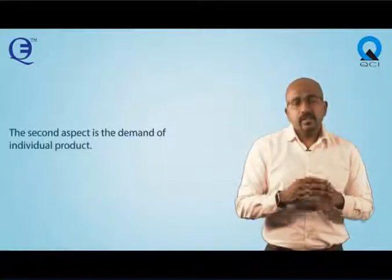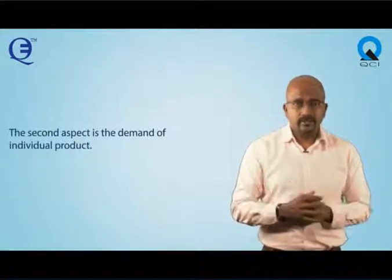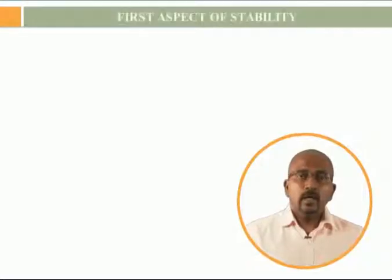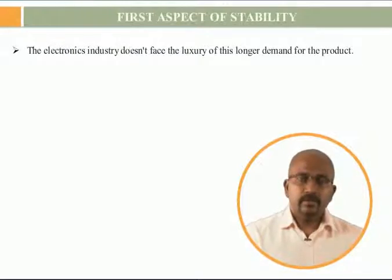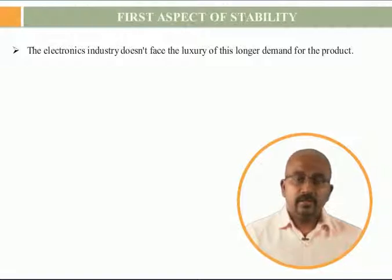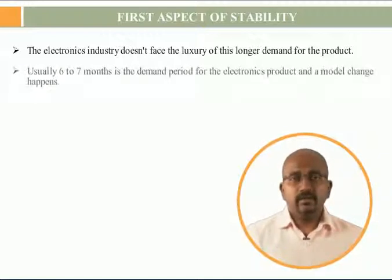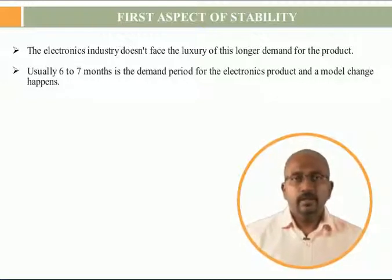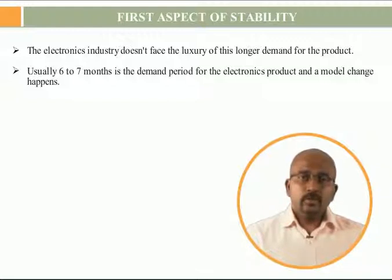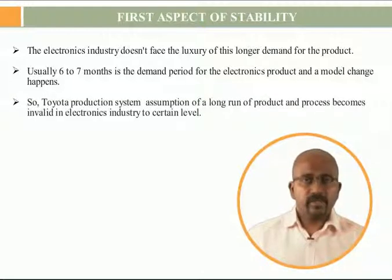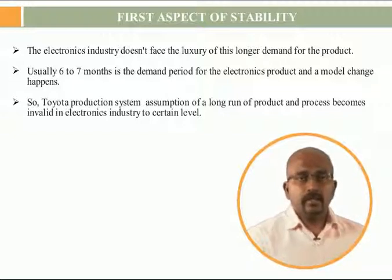The second aspect concerns the demand of an individual product. The electronics industry doesn't face the luxury of long product demand — usually six to seven months is the demand period for an electronics product. So Toyota Production System's assumption of a long run of products and processes becomes invalid in the electronics industry to a certain level.